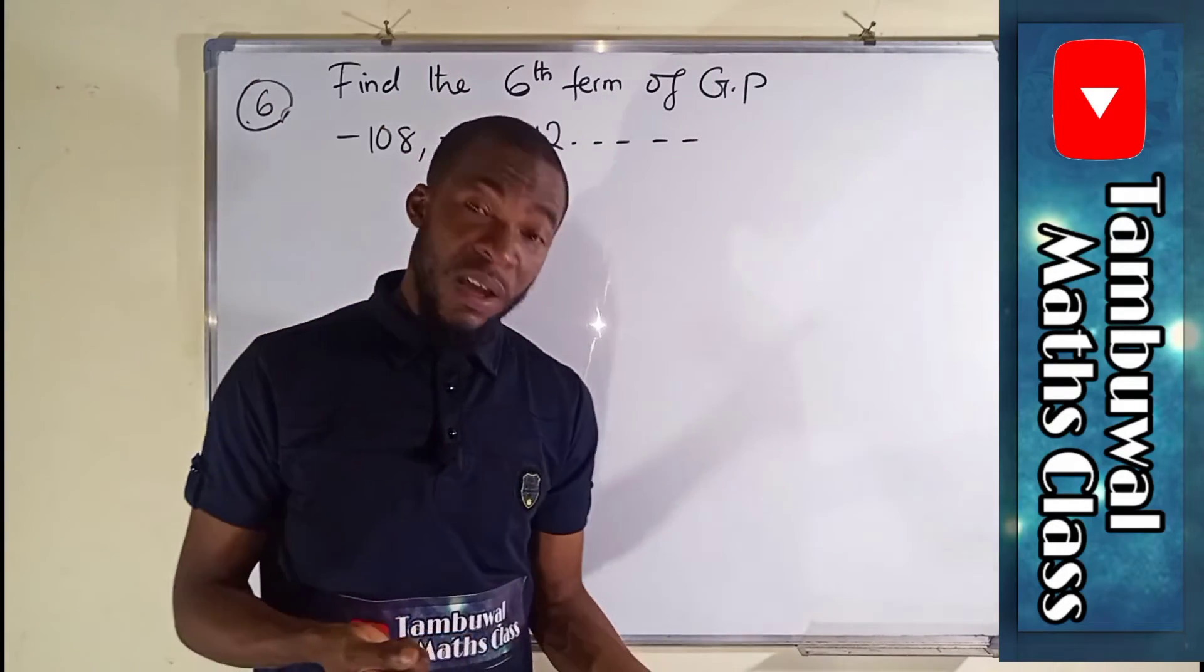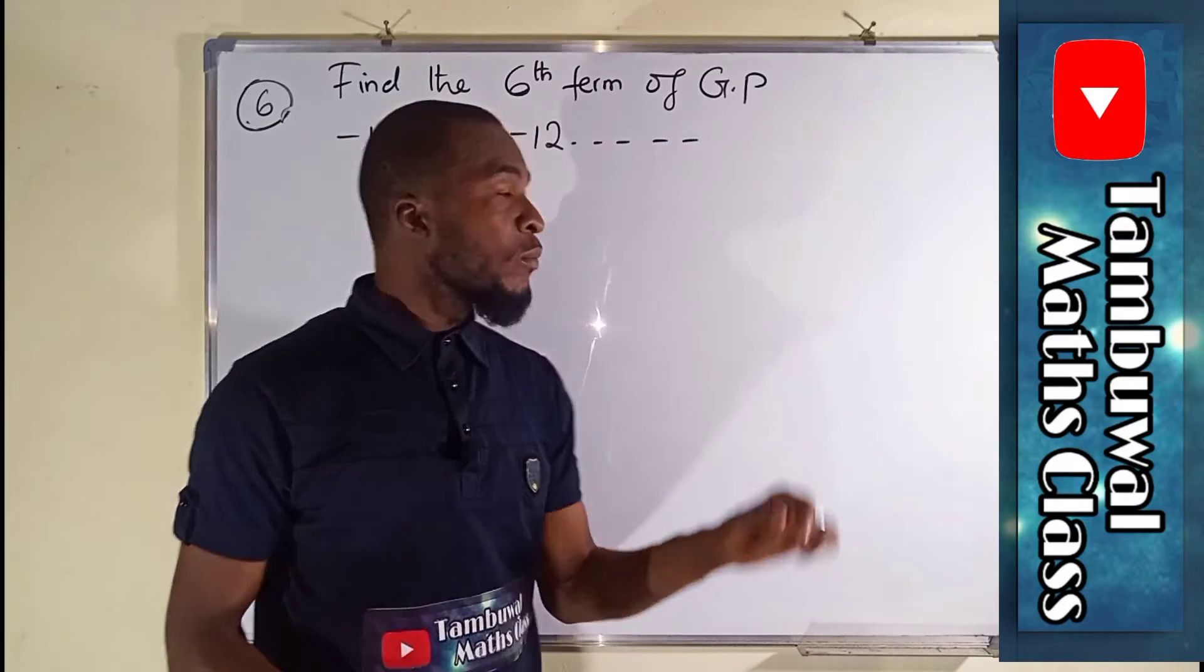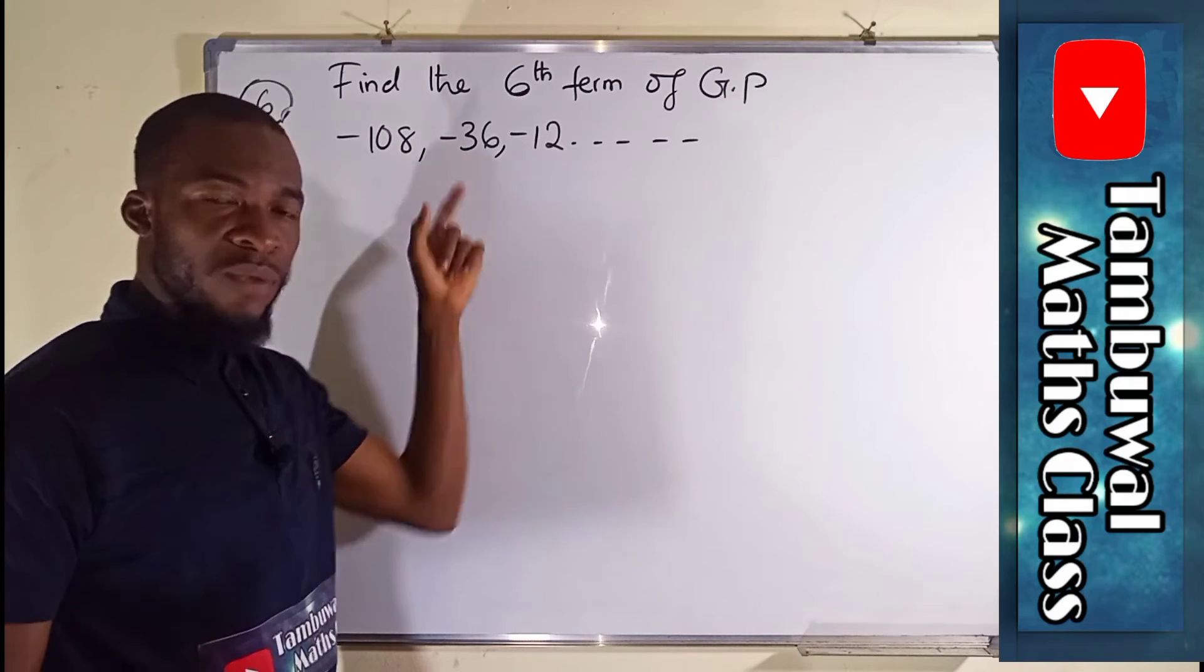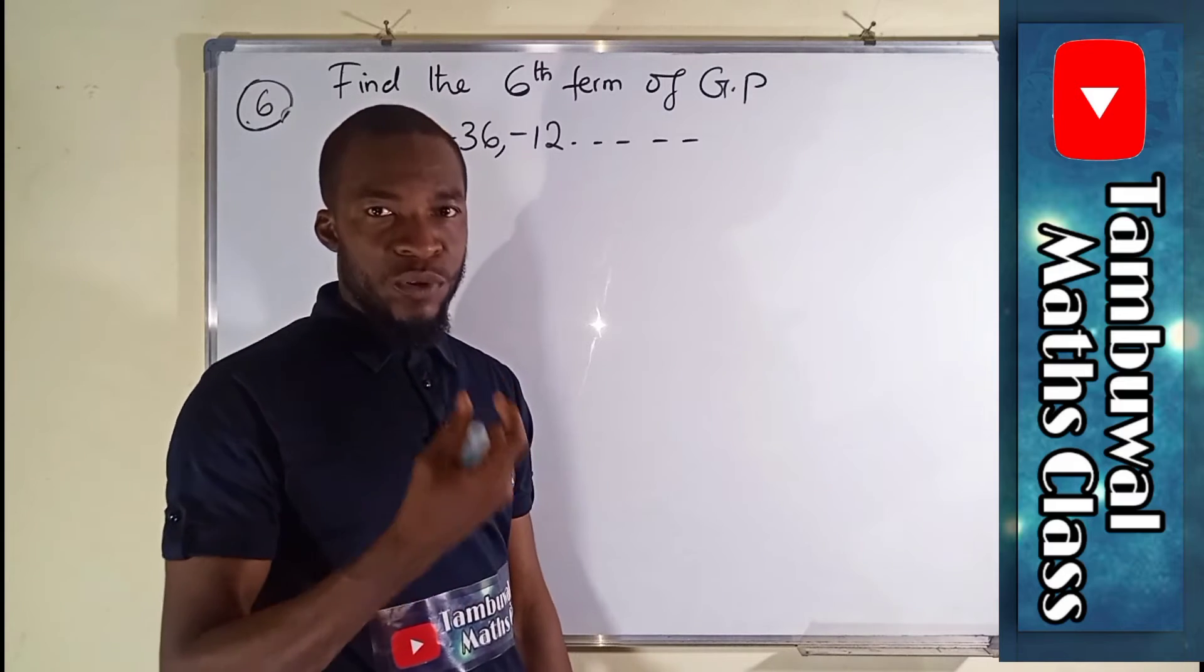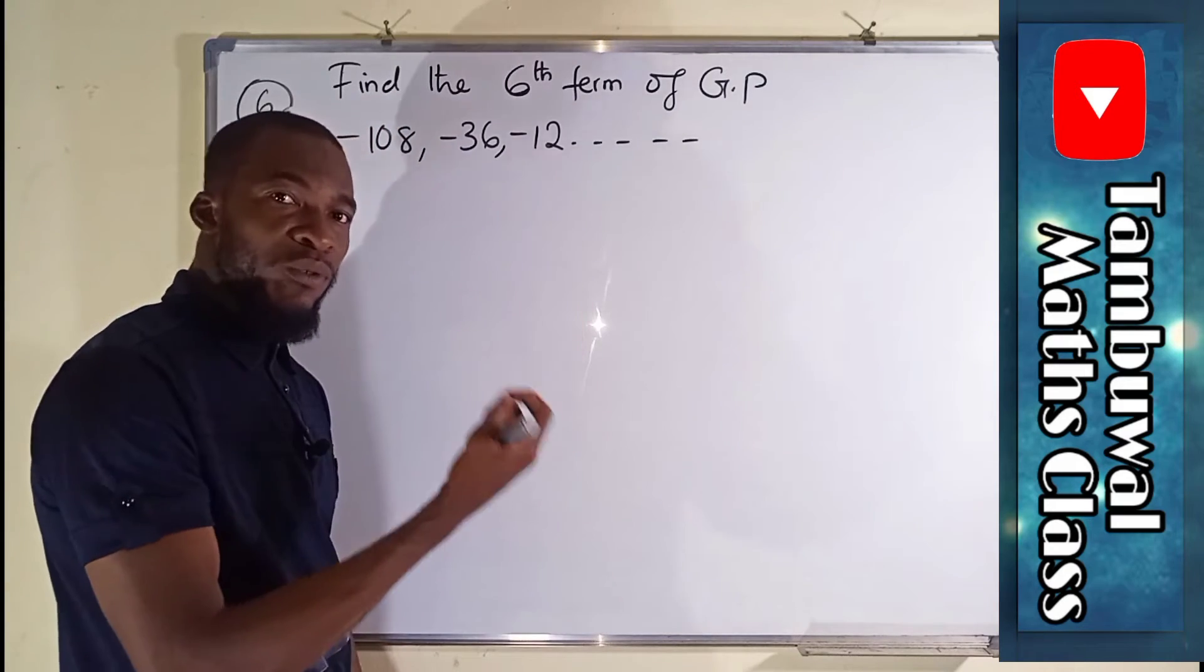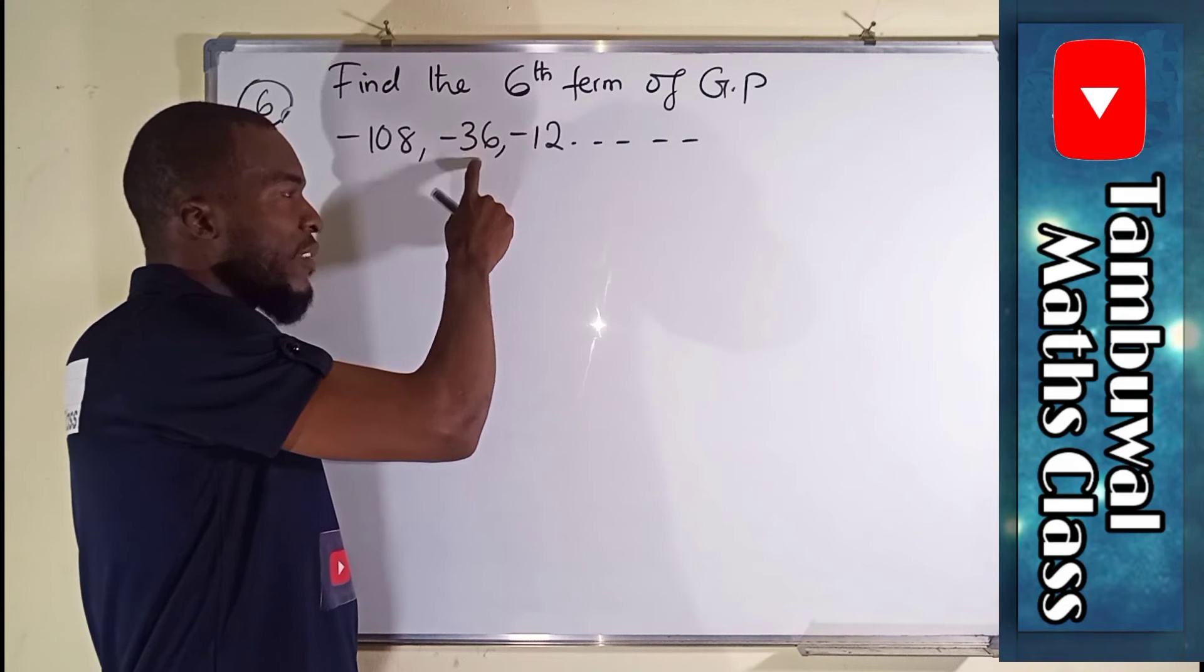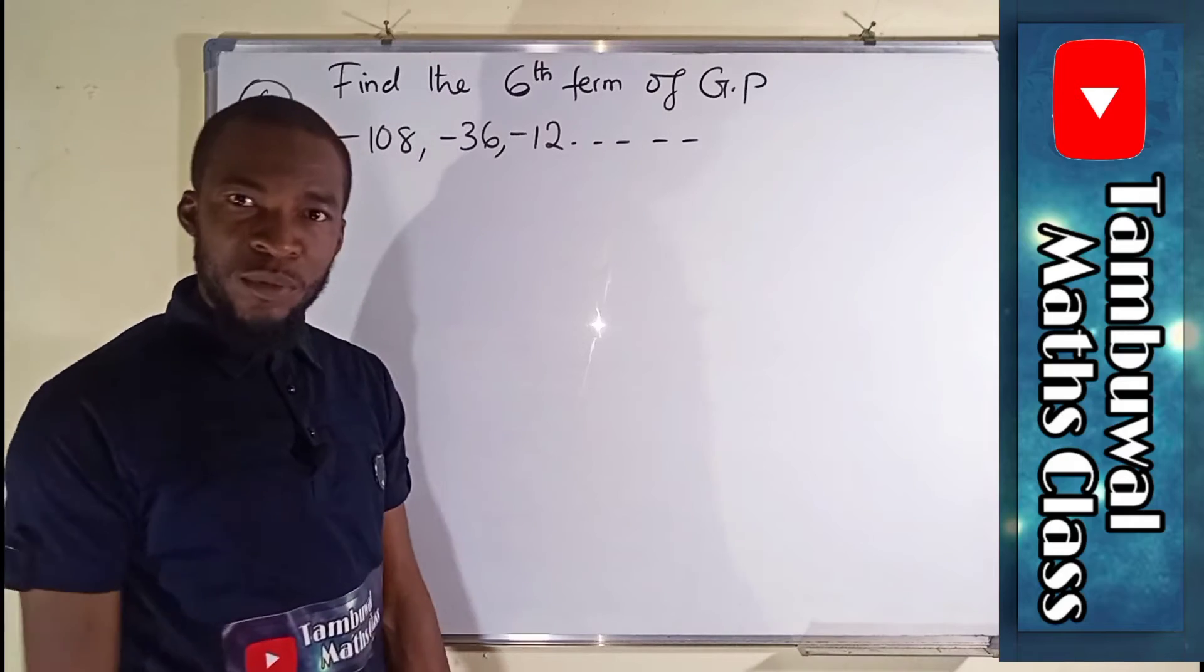You know all these sequences are governed by some laws. In GP, every term multiplied by the common ratio will give you the subsequent term. So there is a unique number which we call common ratio. If you take that common ratio, you multiply by this, it will give you this. Multiply this with that common ratio, it will give you this. But we have to find that common ratio.